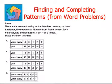Let's look at the next question. The oceans are contracting as the beaches creep up on them. Last year, the beach was 18 yards from Fran's House. Each summer, it is 1 yard further from Fran's House. That means the distance is increasing by 1 yard every year.